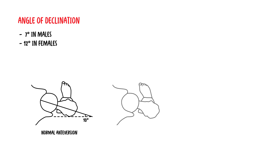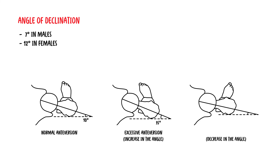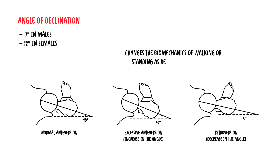Excessive anteversion is an increase in the angle of femoral torsion, while a decrease in the angle of femoral torsion is known as retroversion. These changes affect the biomechanics of walking and standing, as depicted by the foot stance shown. With excessive anteversion, the foot will be in a medial stance, and in retroversion, the foot will be in an external stance.